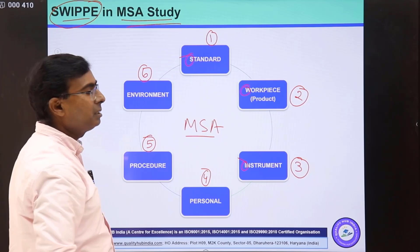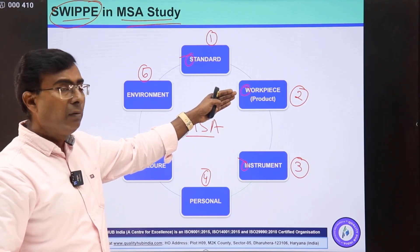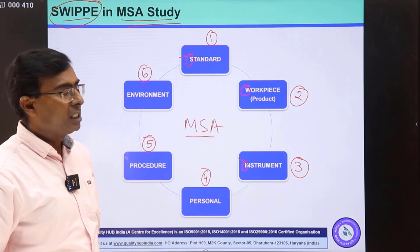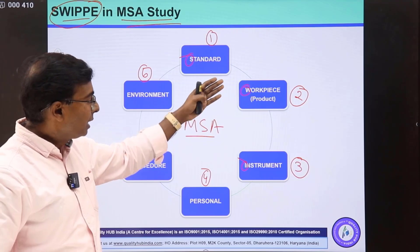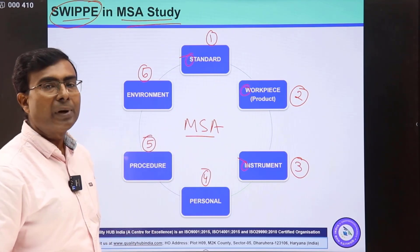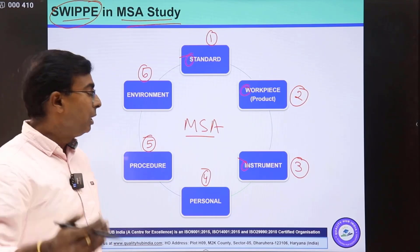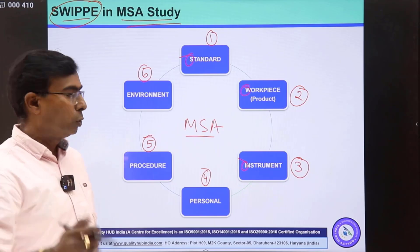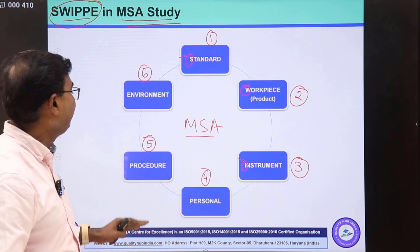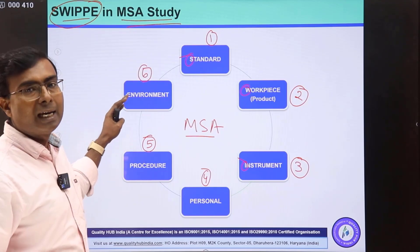We need to have some standard in place. We need to have some workpieces for our study — generally we take 10 pieces for variable study and 50 pieces for attribute study. Then we need to have some instrument or gauges for the study. We need to have some appraiser who would be inspecting, and in attribute study we need to have an additional expert also. Then we need to have some work instruction, procedure, or guideline for conducting the MSA study.